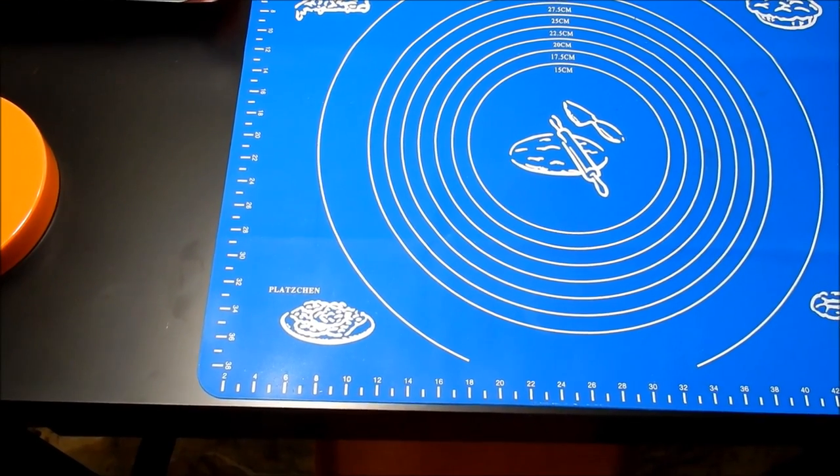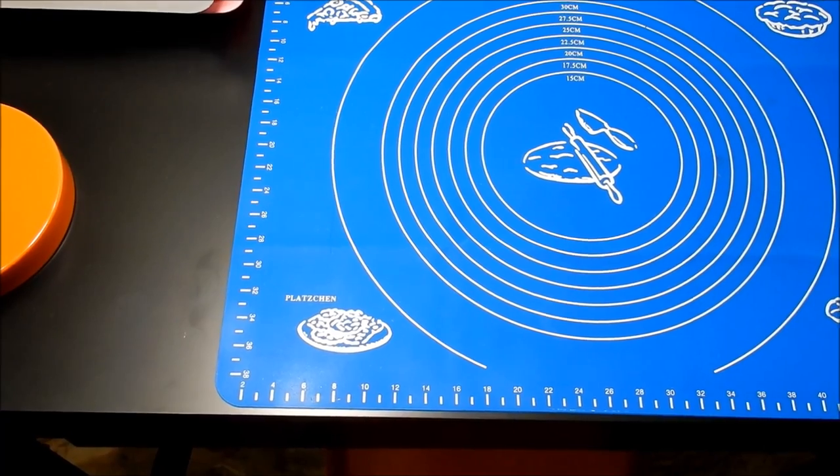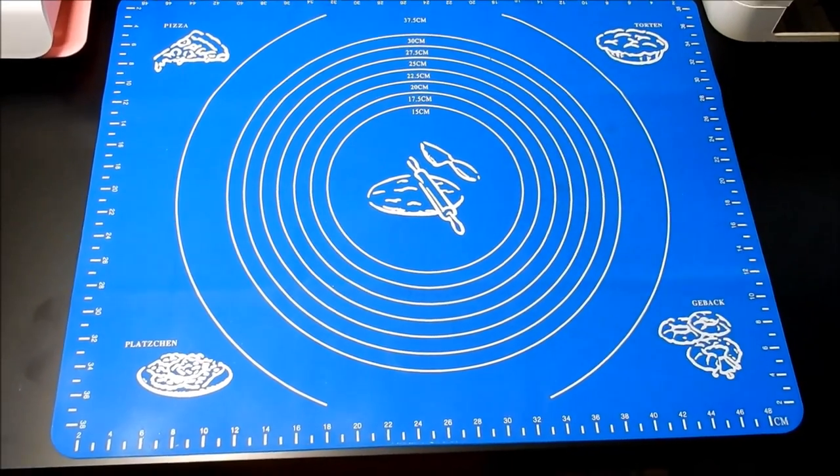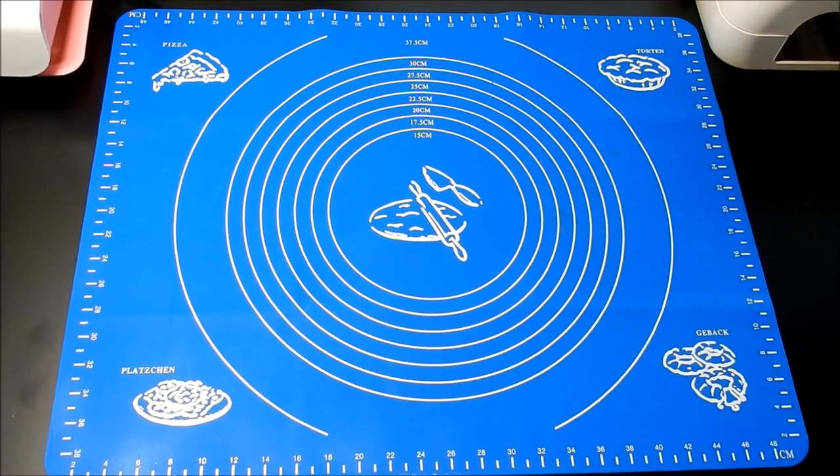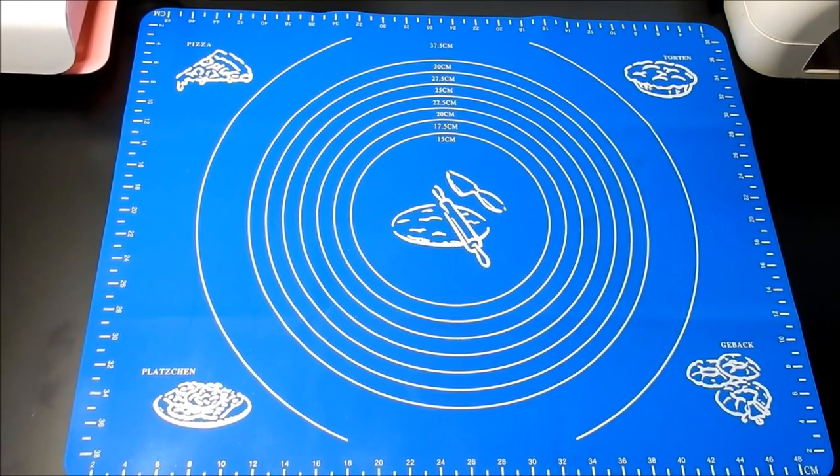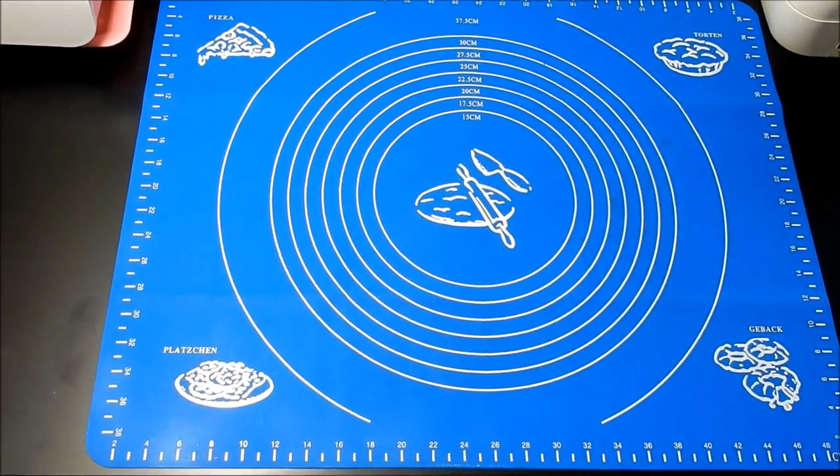It is 19.5 inches by 15.5 inches. On the eBay ad it says 50 centimeters by 38 centimeters, and 50 centimeters is 19.5 inches.